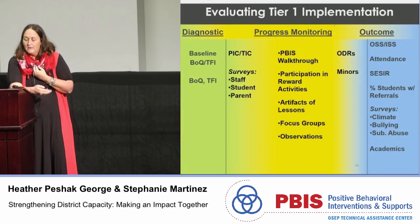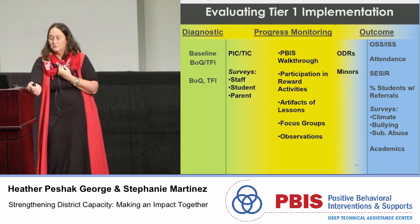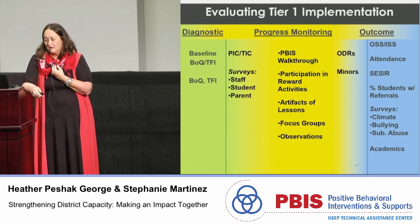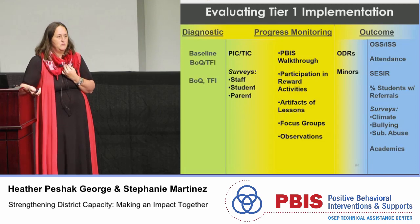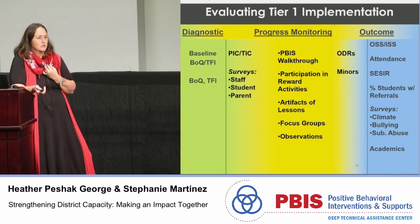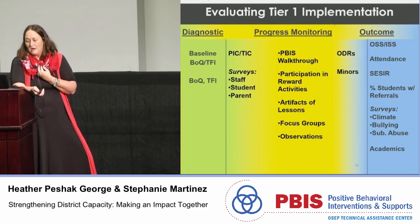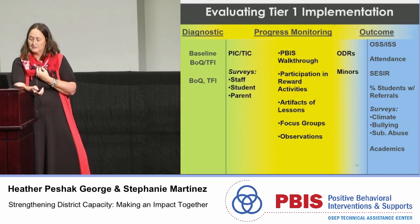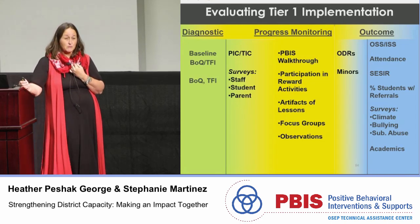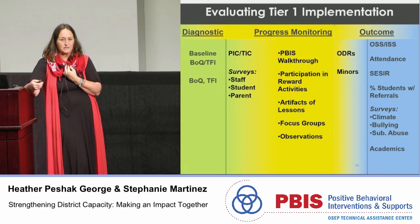We have various data tools: the BOQ or TFI for diagnosing which elements to work on; the PBS Implementation Checklist or TIC for progress monitoring throughout the year; ODRs (office discipline referrals) to monitor throughout the year; and at the end of the year, OSS (out-of-school suspension), ISS (in-school suspension), and SESIR — the School Environmental Safety Indicator Reports — which are incidents reported to the Department of Education, including tobacco, alcohol, drugs, firearms, and weapons. We want to make sure when we look at data, we break it down to see how students with disabilities are included, and use that to identify specific areas to work on.